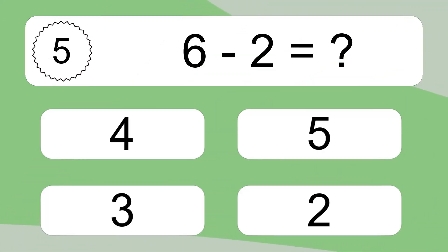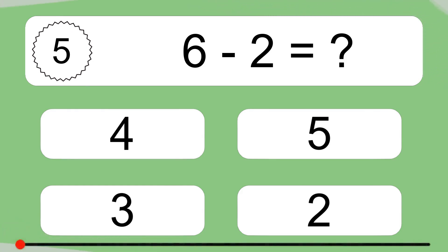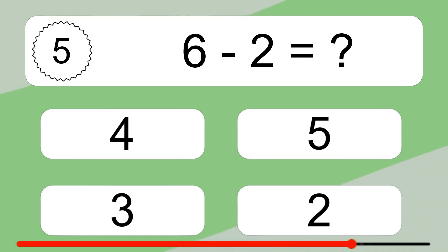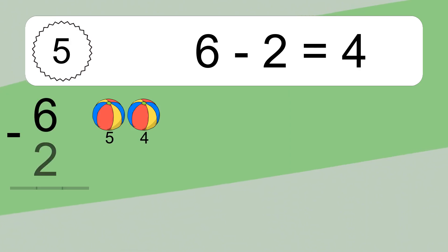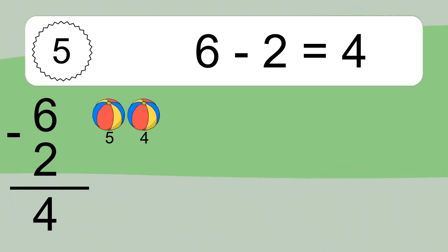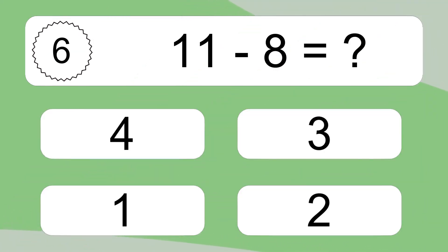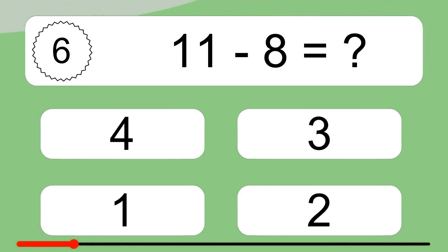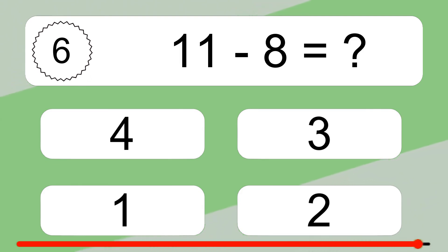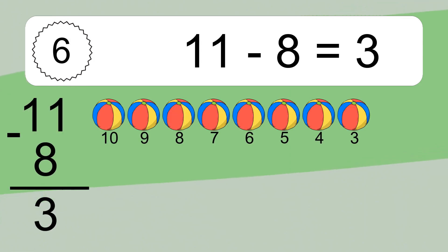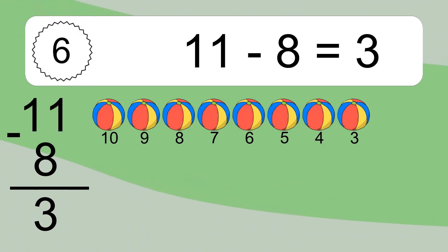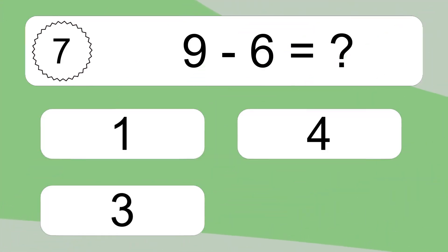6 minus 2 equals what? 6 minus 2 equals 4. Let's count it: 5, 4. 11 minus 8 equals what? 11 minus 8 equals 3. Let's count it: 10, 9, 8, 7, 6, 5, 4, 3.